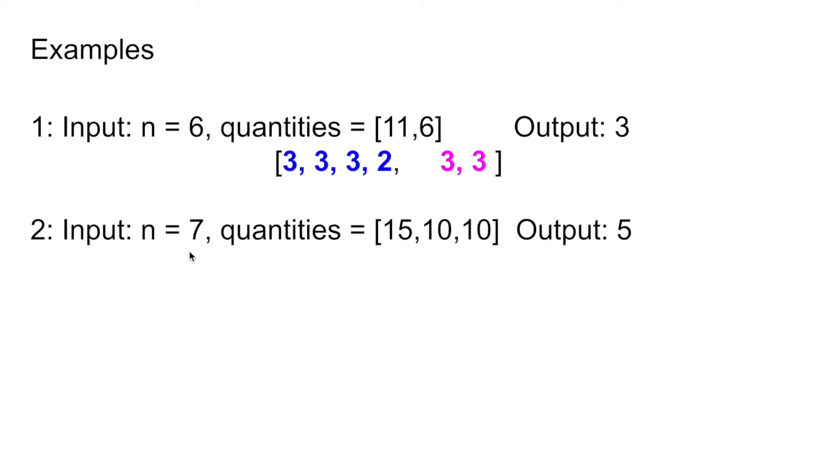Example 2: 7 stores and three types of products. If we distribute 5 to each store, the minimum max number of products is 5.